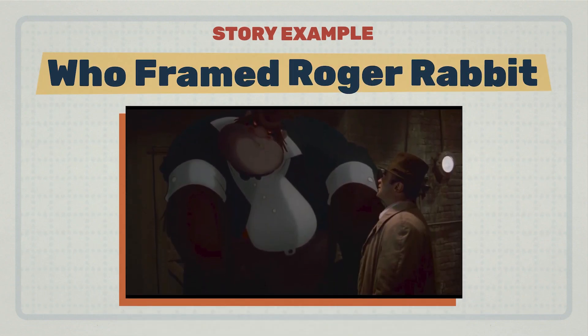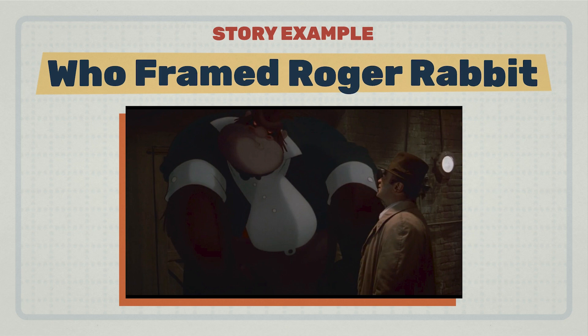Protag Eddie Valiant must present a password for the gorilla — the bouncer — before entering the club. So in this way, the gorilla acts as a threshold guardian, guarding the threshold of the new situation of act two. This moment also showcases a large external change as Valiant travels to a new location.